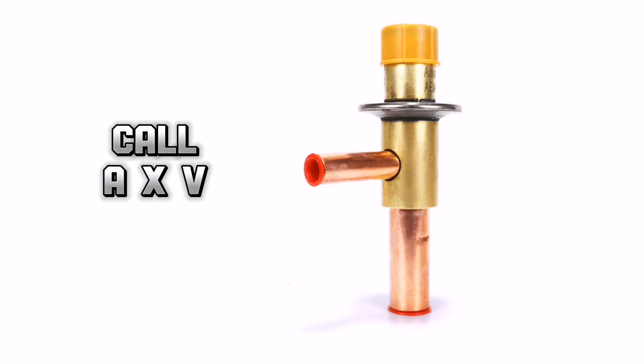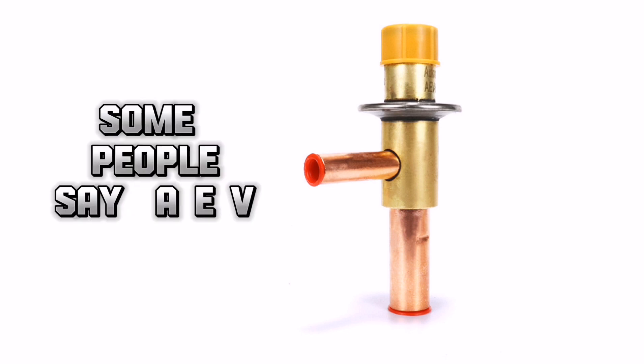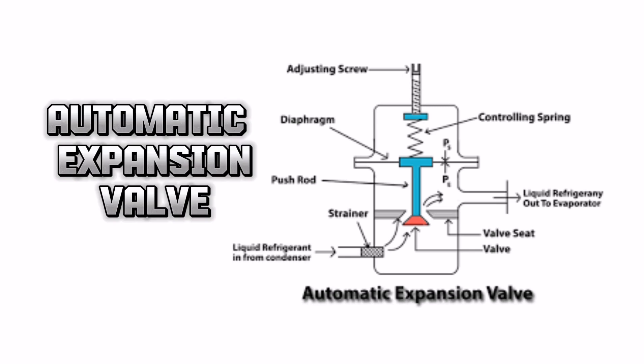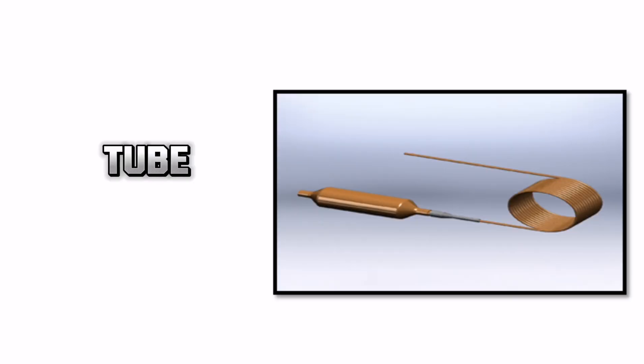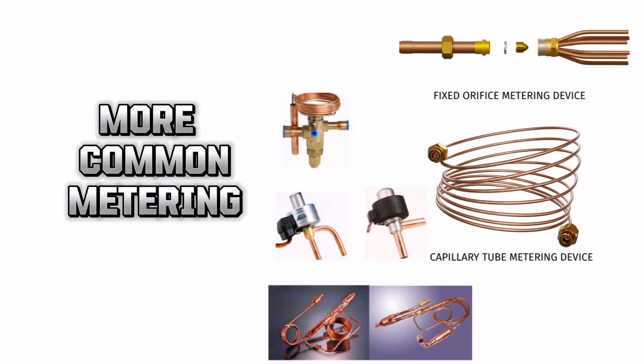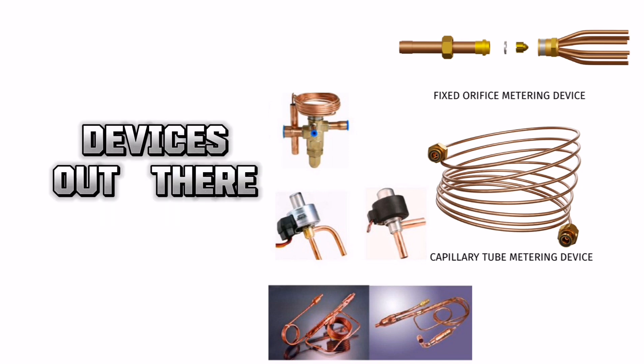Then there's what they call AXV. Some people say AEV. Depends on who you're talking to. Automatic expansion valve. Then there is your capillary tube. And then there is your piston. These are the five more common metering devices out there.